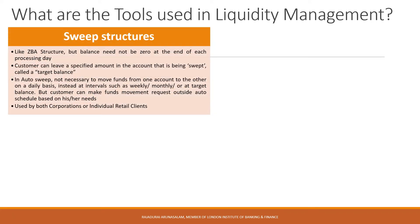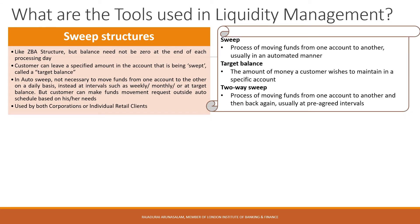A variation to the traditional ZBA structure exists and is usually referred to as sweep structures. As with ZBAs, funds are physically moved on an automated basis from one account to another. However, the balance need not be brought to zero at the end of each processing day. Instead, a customer can leave a specific amount in the account that is being swept.